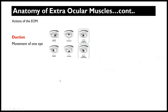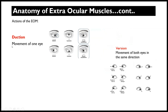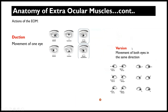In terms of the actions of the extraocular muscles, the first type of movement is duction. Duction by definition is the movement of one eye. This can be adduction or abduction — duction refers to movement of a single eye. We can also have movement of both eyes in the same direction, which is called version.